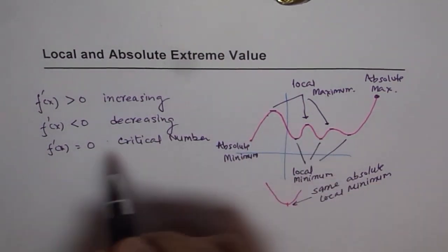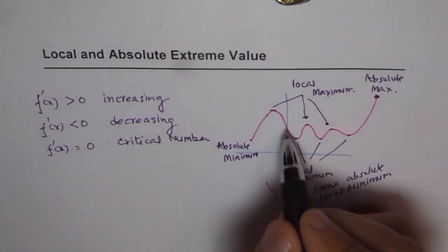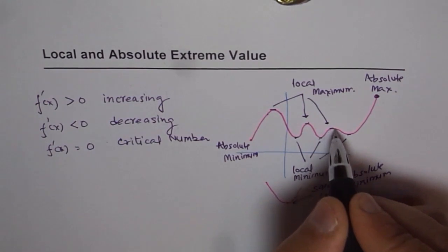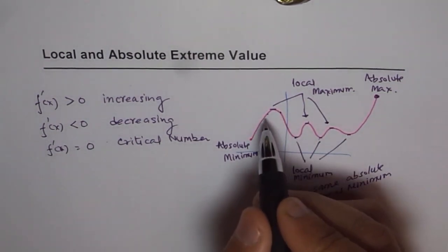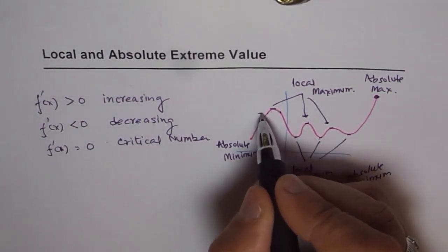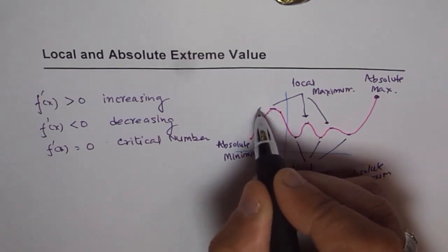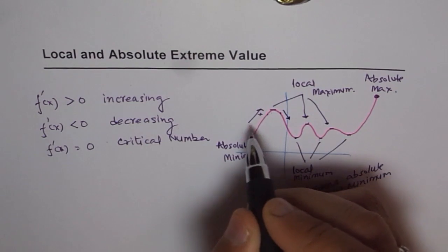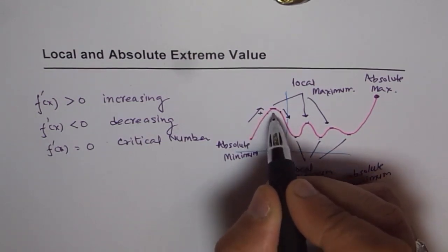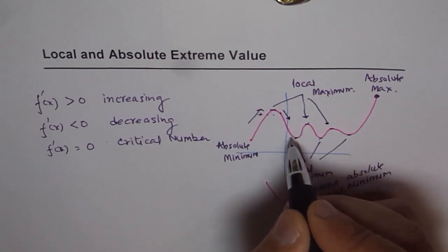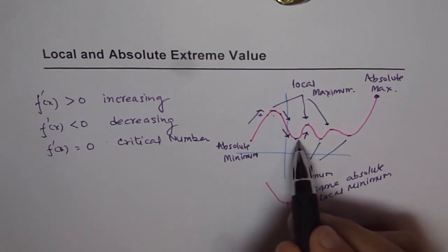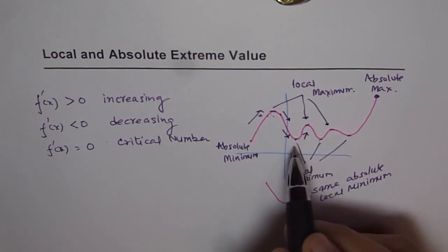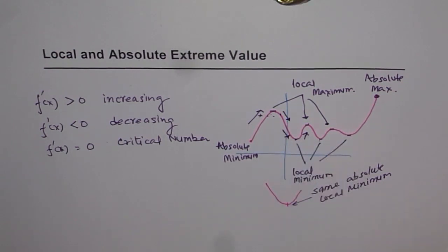If we find the derivative of the function, we can identify the critical points. Then we observe what happens to the derivative before and after each critical point. If the derivative changes from positive to negative — increasing to decreasing — we have a local maximum. If it changes from negative to positive — decreasing to increasing — we have a local minimum. This is the algebraic way of finding extreme points using derivatives.